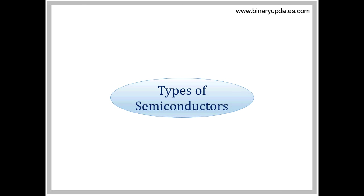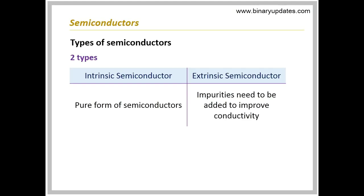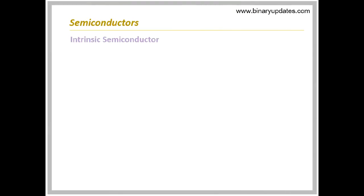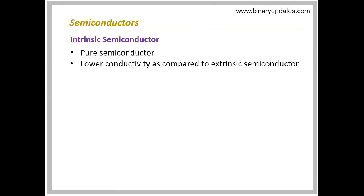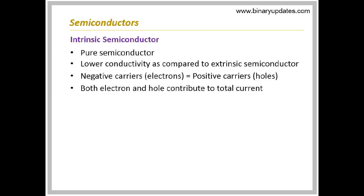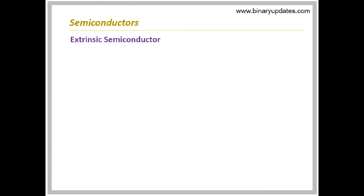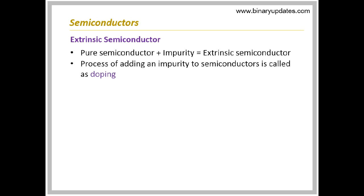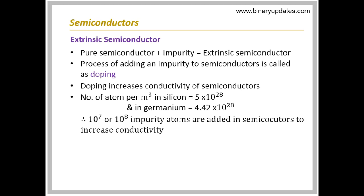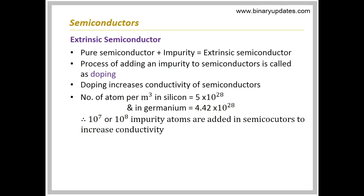Types of semiconductors. There are two types of semiconductors: intrinsic and extrinsic semiconductors. Pure form of semiconductors are called intrinsic semiconductors, while semiconductors which need an impurity to improve their conductivity are called extrinsic semiconductors. Intrinsic semiconductors have lower conductivity and an equal number of electrons and holes. Examples are germanium and silicon. Adding an impurity in an intrinsic semiconductor results in an extrinsic semiconductor with higher conductivity. The process of adding an impurity is called doping. Mostly 10⁷ to 10⁸ atoms of impurity are added to the semiconductor to increase conductivity.